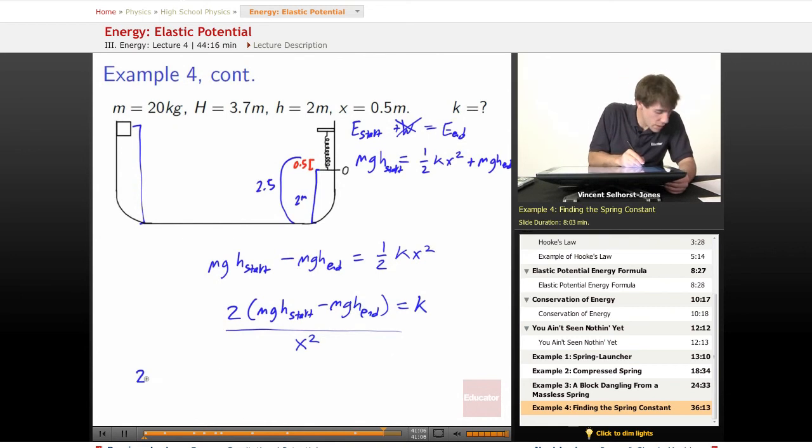We plug everything in and we're going to get 2 times 20 times 9.8 times, well, doesn't really matter in this case, but it would be a little bit easier to figure out what's on the inside first. In fact, we can make it even a little bit easier by pulling out the mg, h start minus h end.